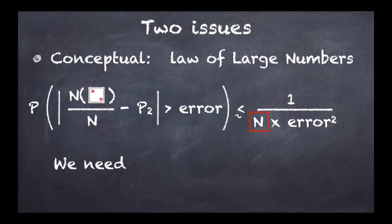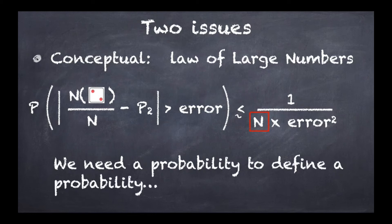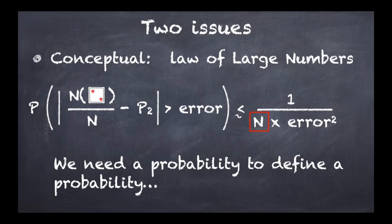The problem is that we need a probability here to define a probability. The probability for getting this difference larger than some error is itself a probability, so we are running in circles. Conceptually, to define the probability of obtaining two spots, we need the probability for the difference between the frequency and p2 to be larger than some error. If we then try to define that new probability using a frequentist approach, we would need yet another probability, and so on — it's a never-ending story. Either we run into a circular argument, or an infinite regression.